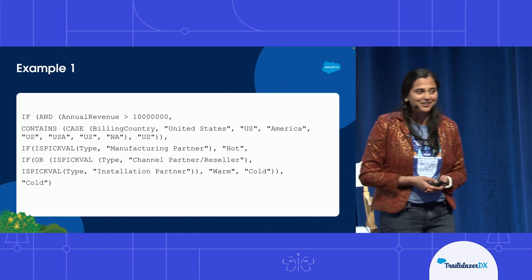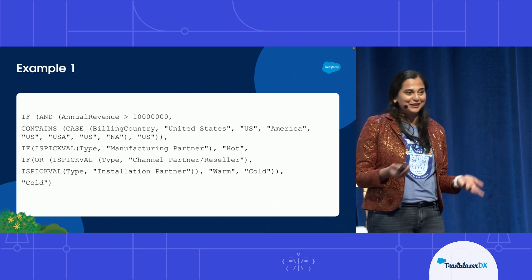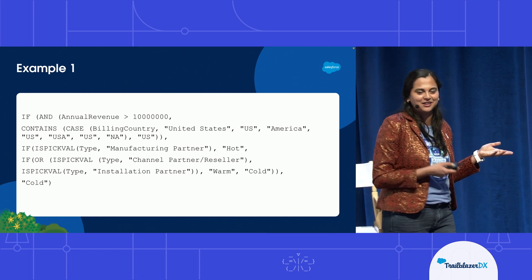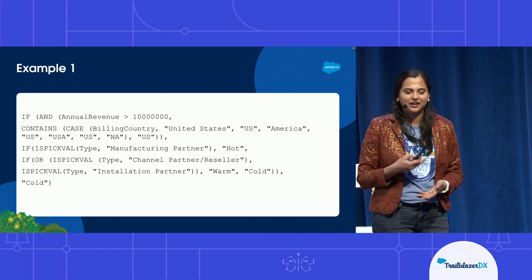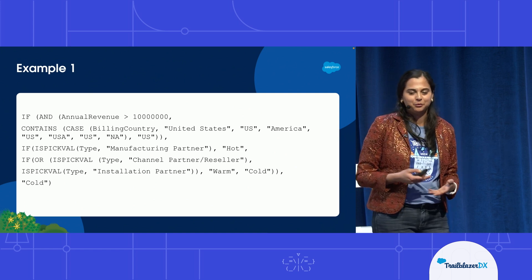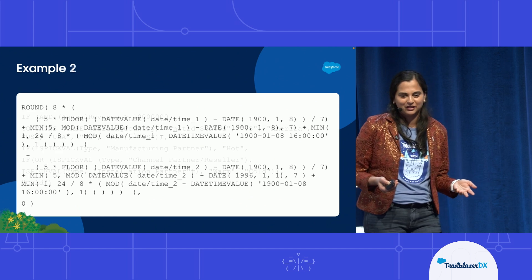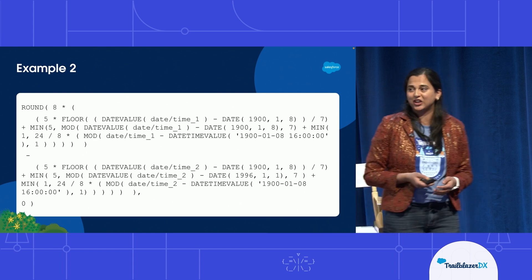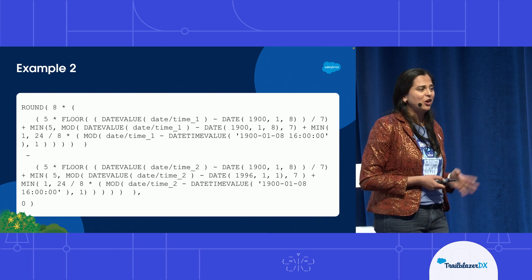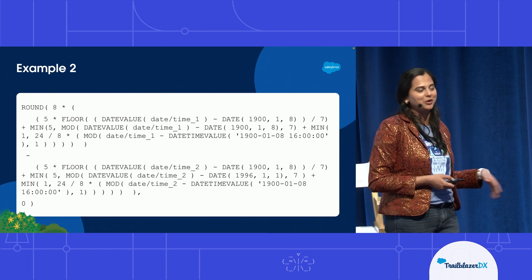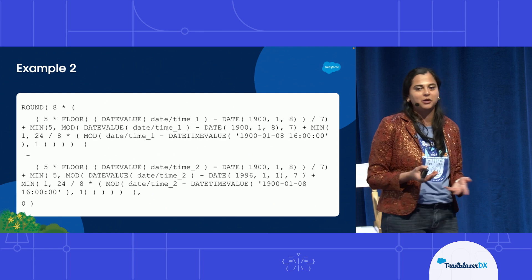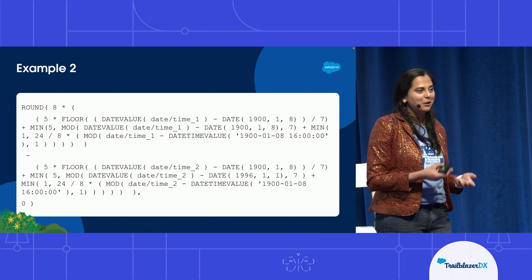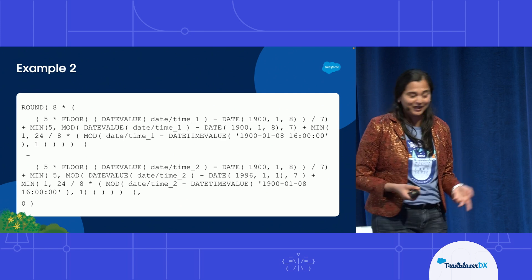The gentleman in the front did a great job trying to translate that. Basically, it's to categorize accounts based on billing country, type, and installation partner into warm, hot, and cold. Let's look at an even more convoluted example. This is just a formula that's meant to count the number of business days between two dates, including public holidays and weekends — and this is what it looks like.